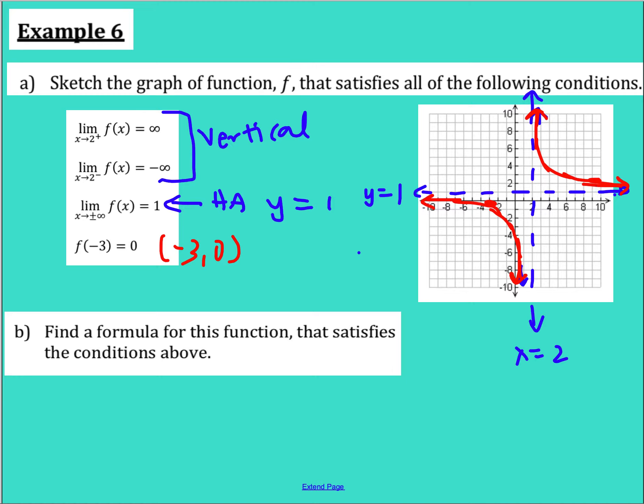Then let's find a formula for this function that satisfies the conditions above. Well let's talk about one thing, vertical asymptotes. Where do vertical asymptotes come from? Our denominator. And where do I have a vertical asymptote? I have one at two. So if I were going to come up with an equation, what would I have had to have in my denominator to have a vertical asymptote of two? I would have to have x minus two, because when I set it equal to zero, I would get an answer of two.